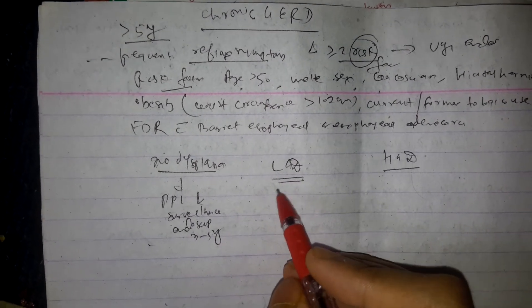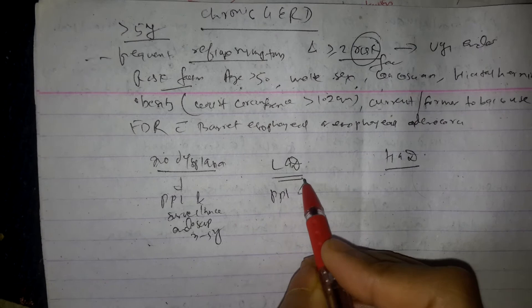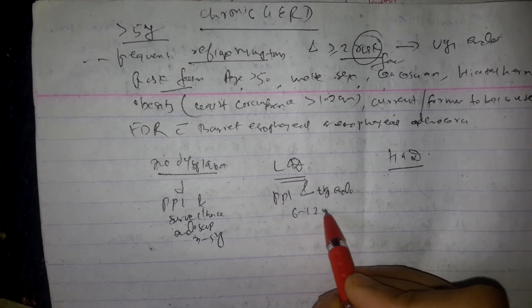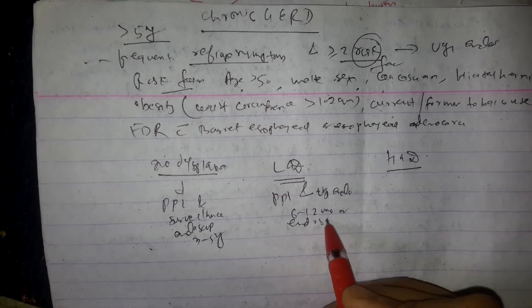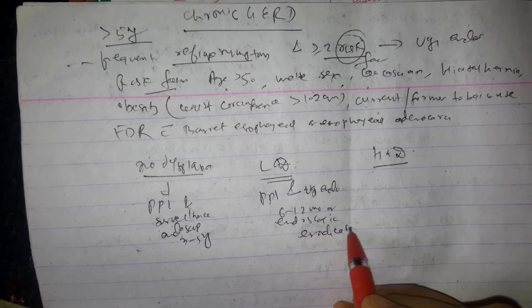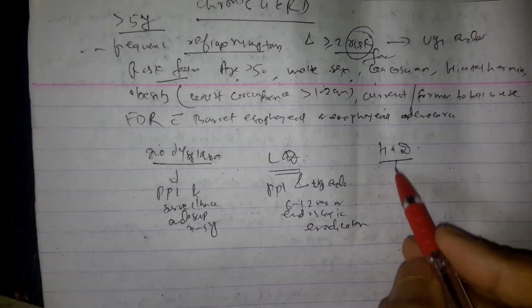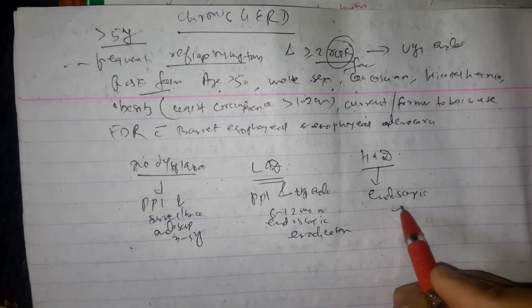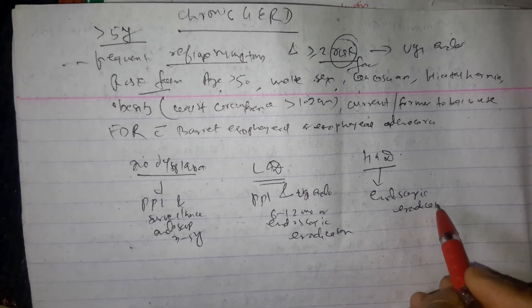But if there is low grade dysplasia, then PPI and surveillance endoscopy is done in six to twelve months, or endoscopic eradication is done of Barrett esophagus. And if there is high grade dysplasia, then endoscopic eradication treatment is done.